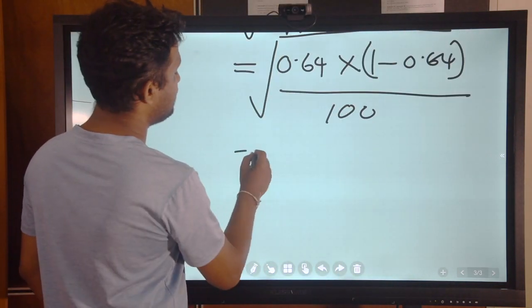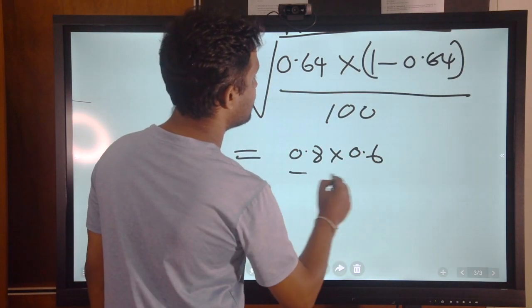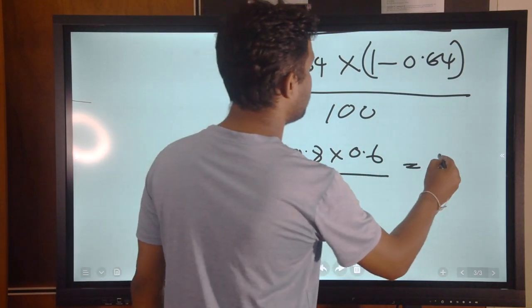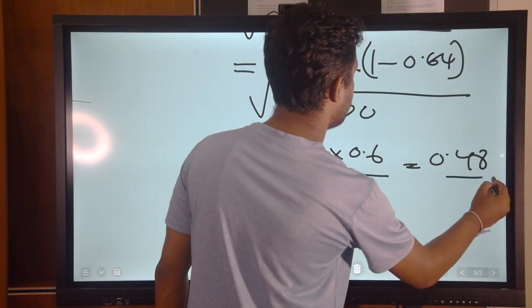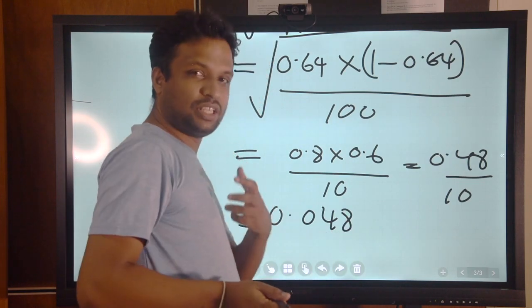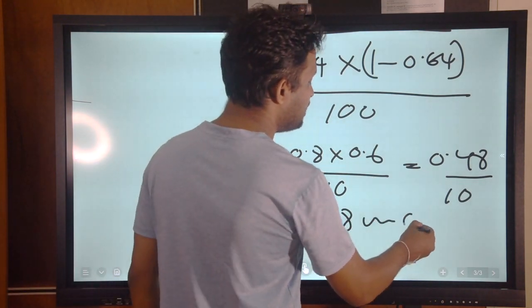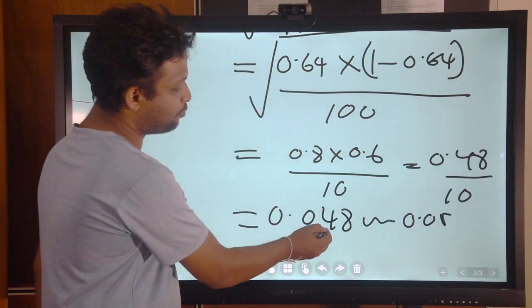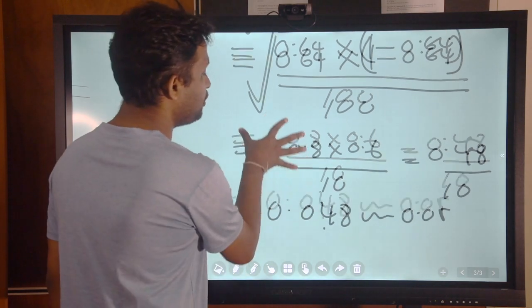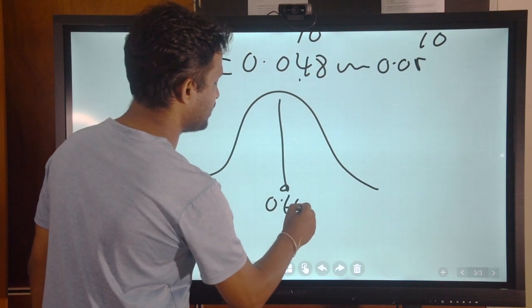So Q is 1 minus P which is 1 minus 0.64 divided by 100, the total square root. Let's do that. This equals 0.8 into 0.6 divided by 10. You can calculate by your own. This equals 0.48 divided by 10, that means 0.048. For the easiness, for this calculation, we will consider approximately this as 0.05 because this is more towards 0.05.